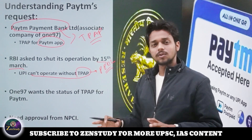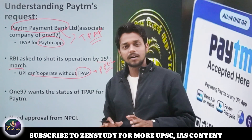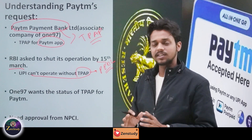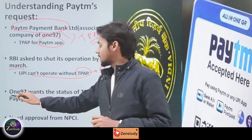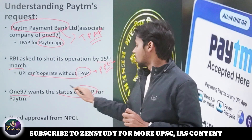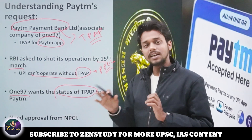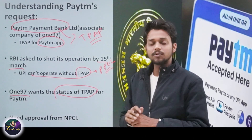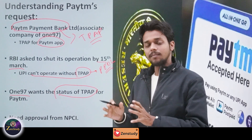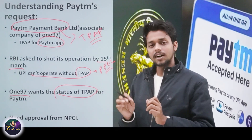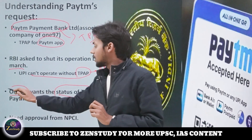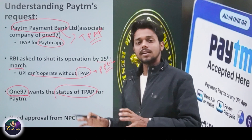So if Paytm Payment Bank is shut down, Paytm's UPI services will be closed. Therefore, 197 Communication — the parent company — has requested the NPCI to give it the TPAP status for the Paytm app. If Paytm Payment Bank is closed, they want the TPAP status for themselves directly, so they have requested the NPCI.